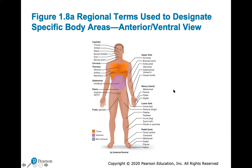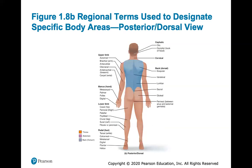Pedal means foot, tarsal means ankle, metatarsal, digital — and manus means hand. A lot of this is review from anatomy. In the back, the posterior or dorsal view includes: the cervical region, scapular region, vertebral, lumbar, sacral, and gluteal region. For the lower limb, you'll have the coxal region, the femoral region is your thigh, and the popliteal region is behind your knee — you may remember the artery that goes behind the knee from anatomy. Good to understand and remember these specific body areas.